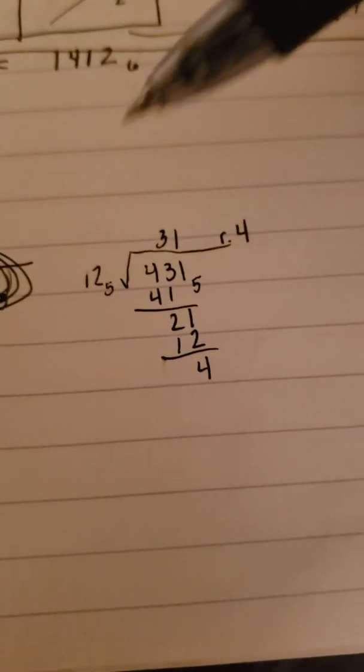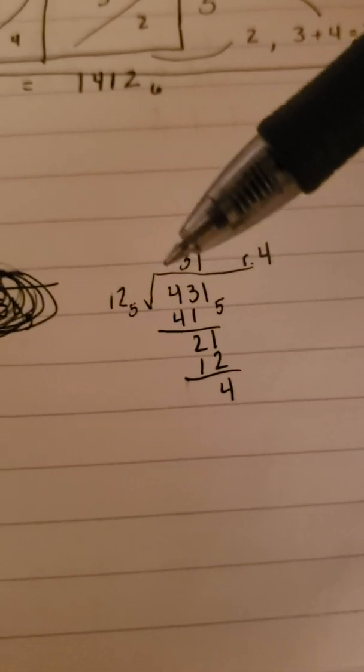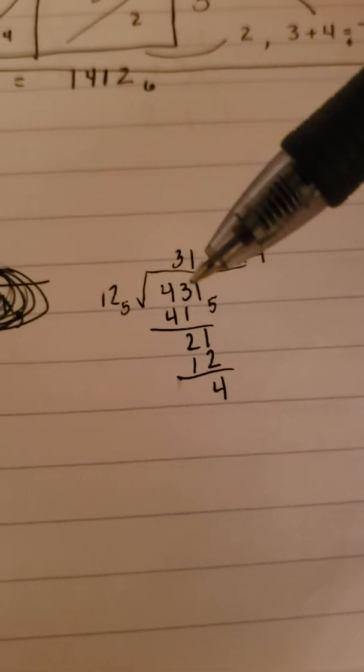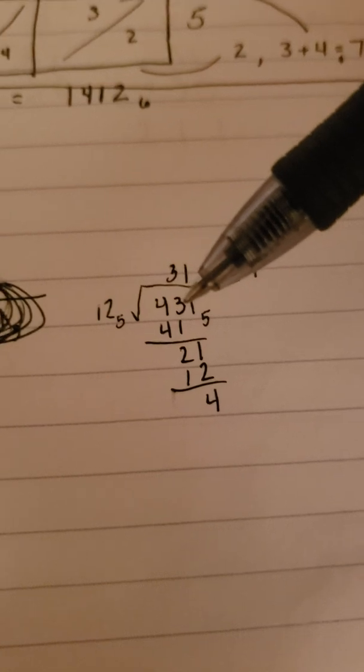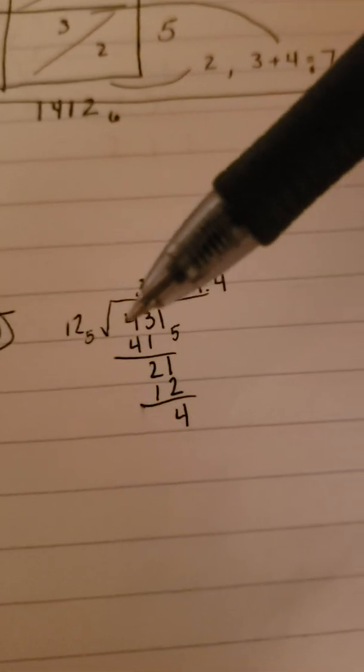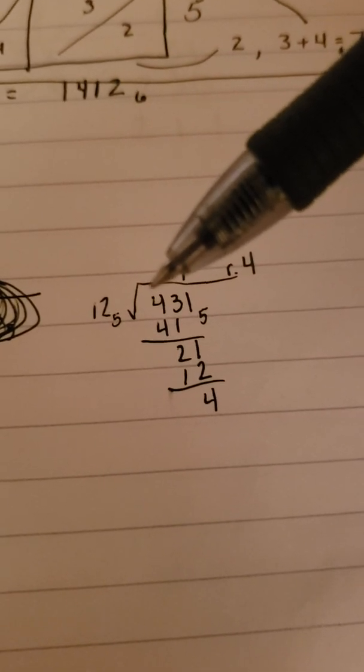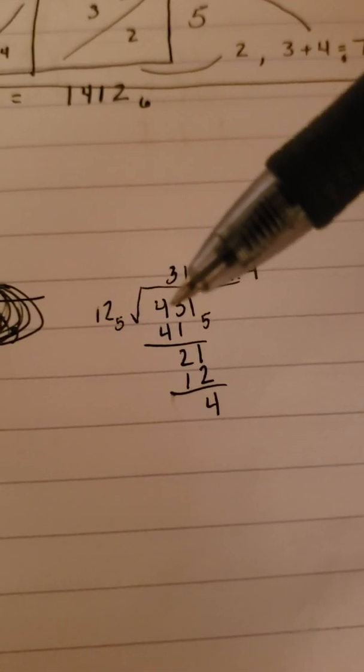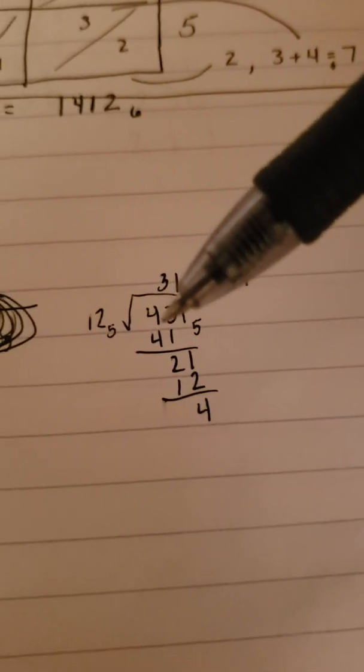Basically what we do is since this is 7, and we're trying to get to 4, there's no way that we can do that. So we go on to this place, the 5's place. We look at 5, and this number is not 43, it's actually 23, because 5 times 4 is 20, plus 3 is 23. We know that 7 can go into 23 three times, and that gives us 21.